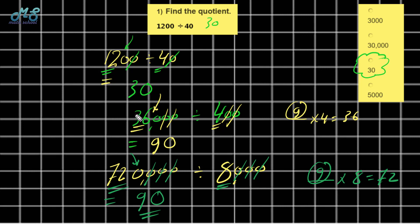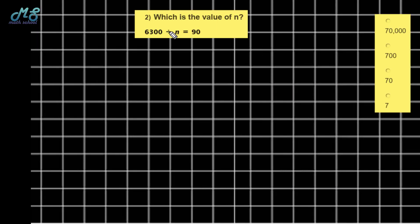It's very important to study times tables and mental math. How can we find the quotient of two numbers if we have compatible numbers like 1,200, 36,000, 72,000 and so on? The easy way is mental math.